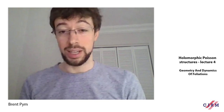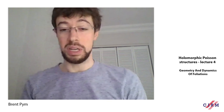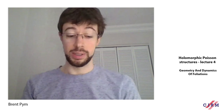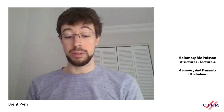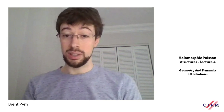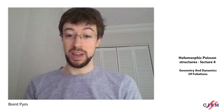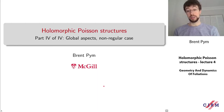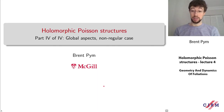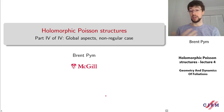This is the final lecture in this mini-course on holomorphic Poisson structures. In the previous lecture, we spoke about some global aspects of Poisson geometry on compact complex manifolds, focusing particularly on the case where the foliation was regular, so all leaves have the same dimension. In this lecture, we're going to talk about the case where the foliation is no longer regular, so we have symplectic leaves of many different dimensions.